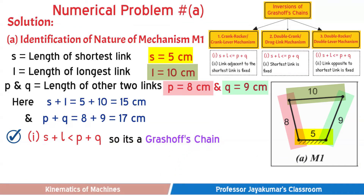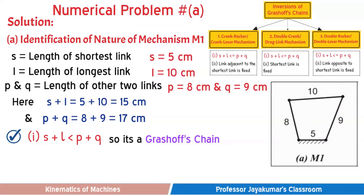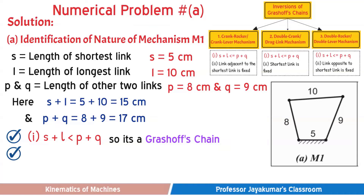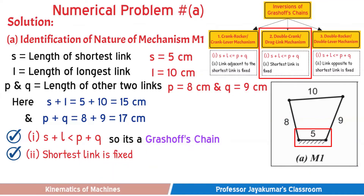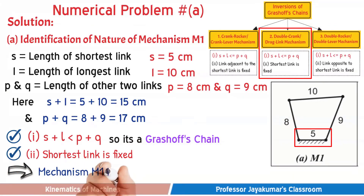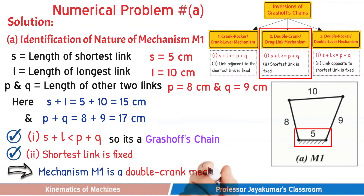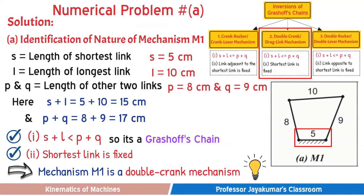Now we check the second condition. By observing Mechanism M1, we can see that the shortest link is fixed. When the shortest link is fixed, this Grasov's chain forms a Double Crank, also known as Drag Link, also known as Rotary-Rotary Converter Mechanism.